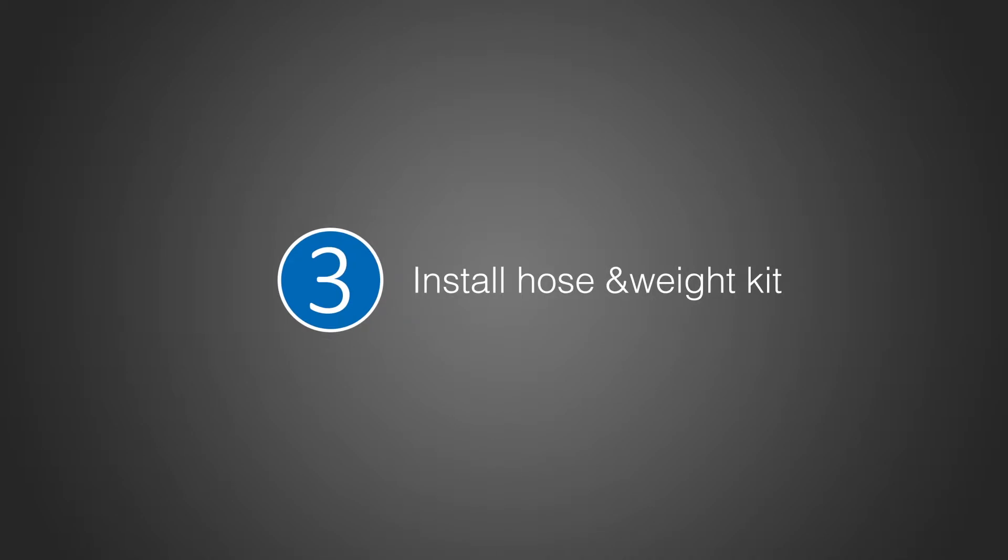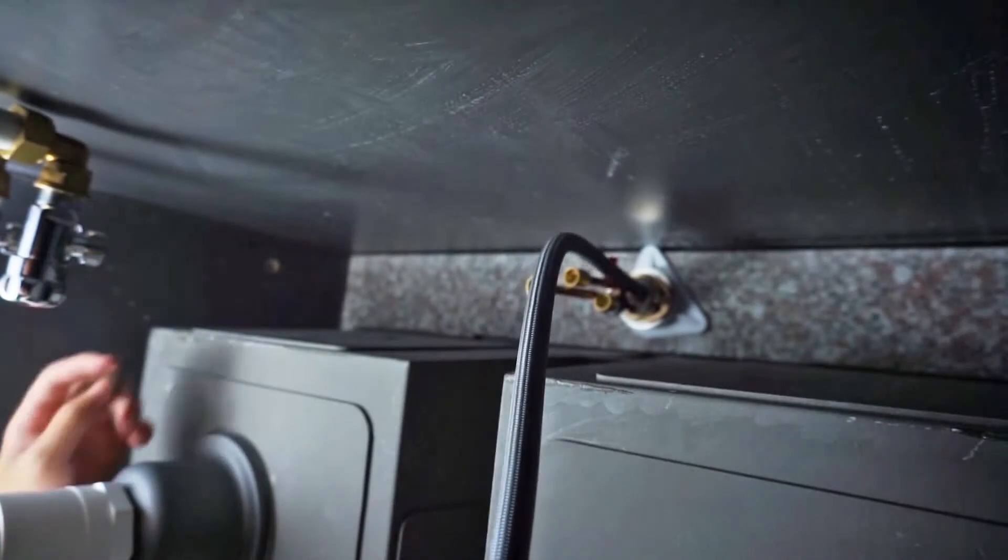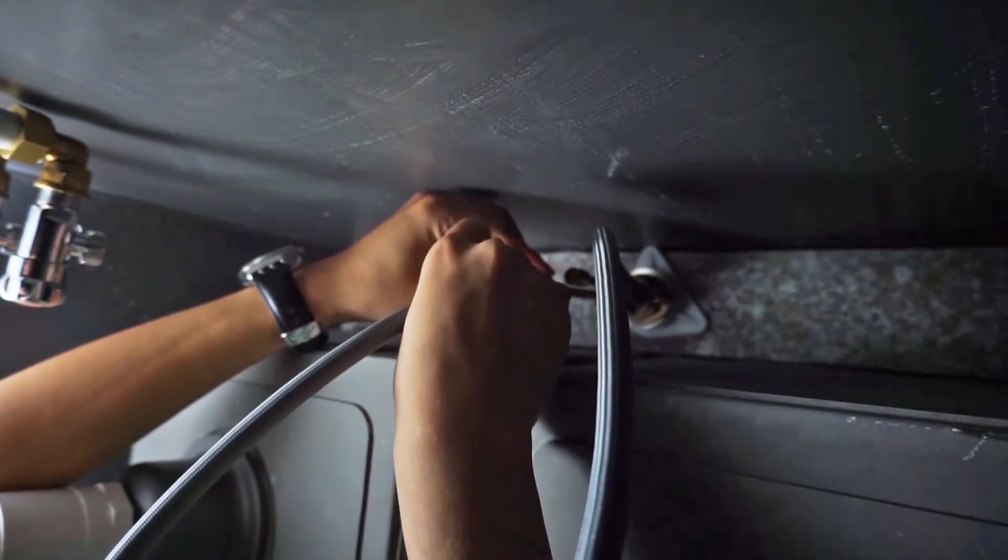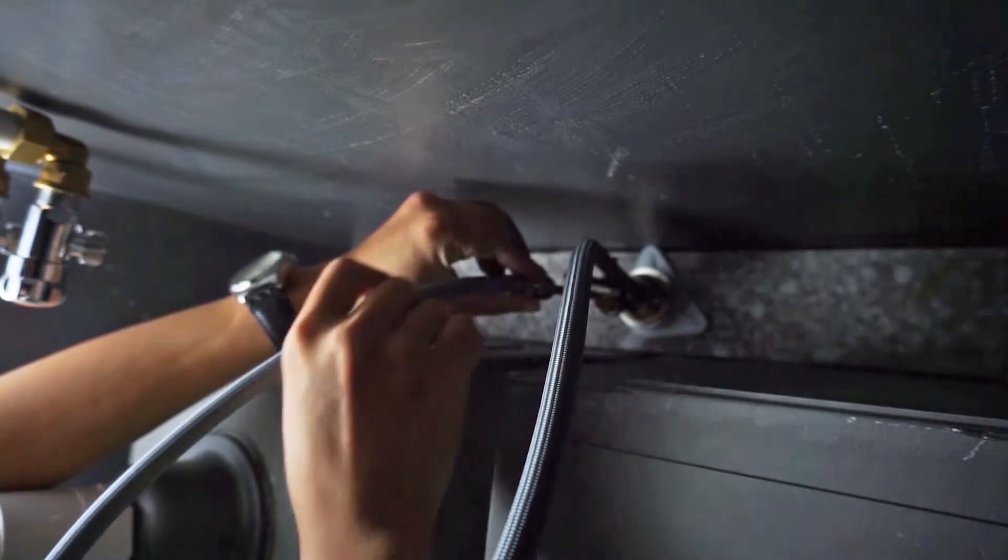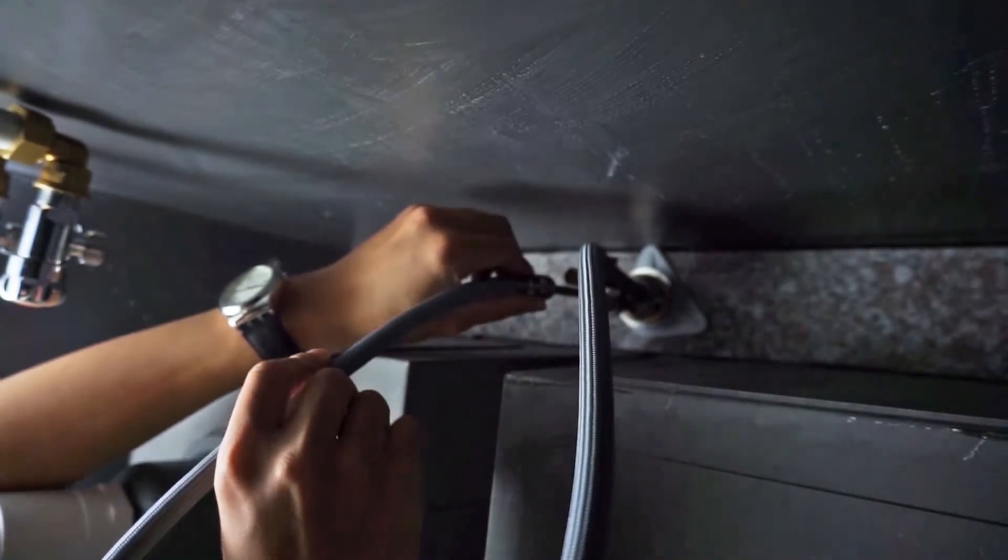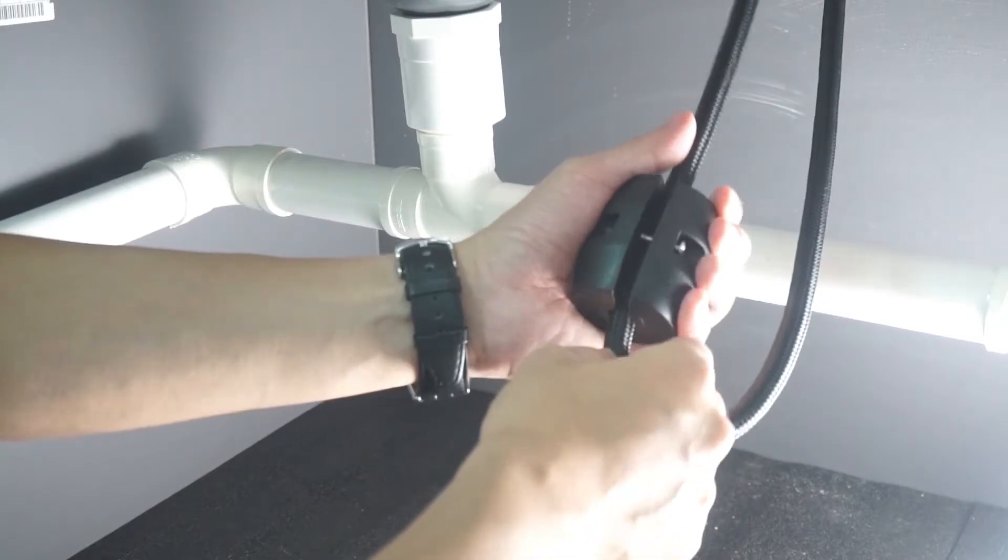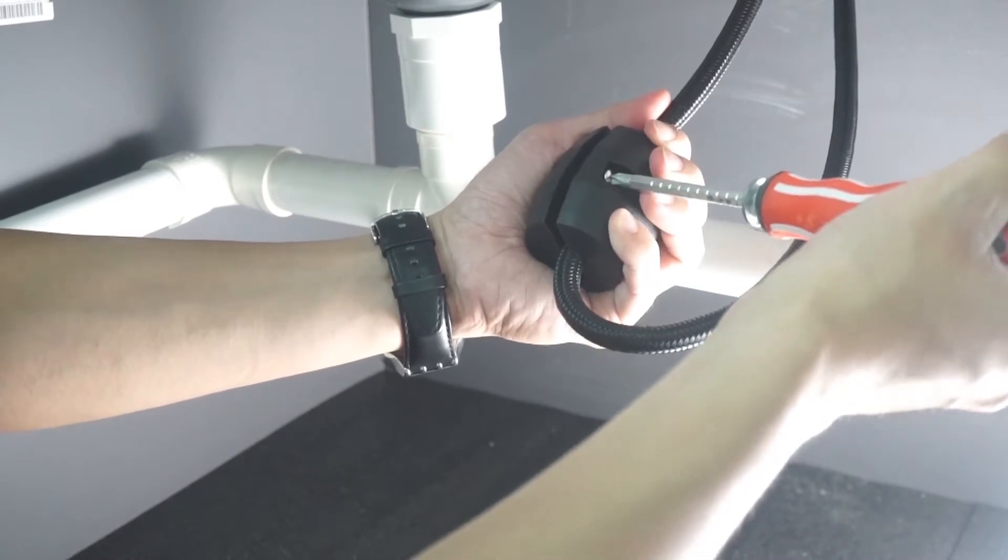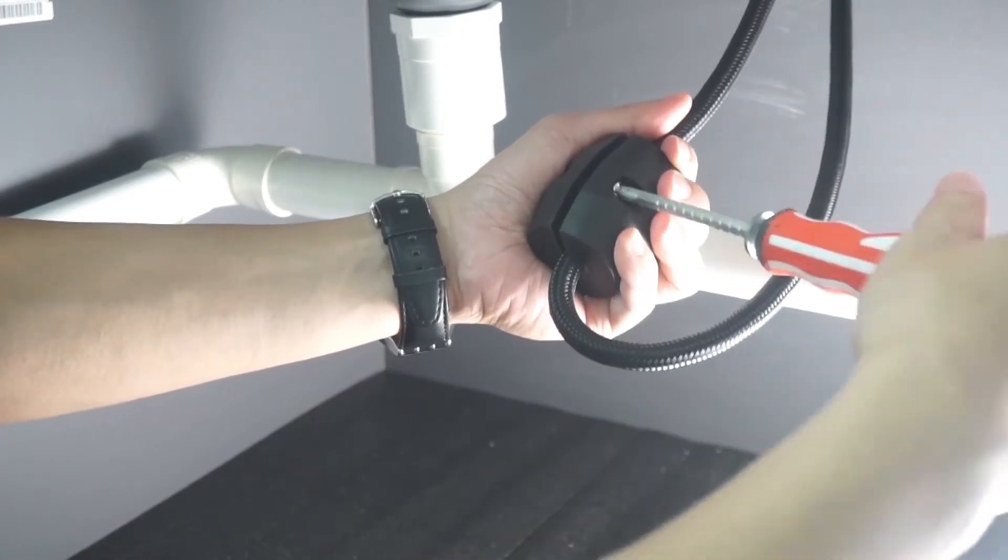Install hose and weight kit. Install the small rubber washer to the copper tube, then install the pull-out hose. Tighten it with screwdriver. Proper installation of the hose weight kit ensures that the spray head retracts smoothly.